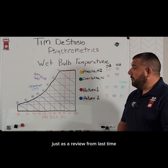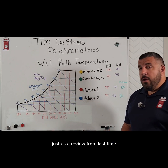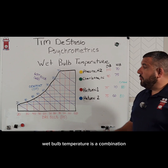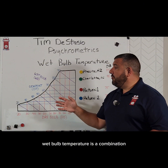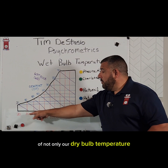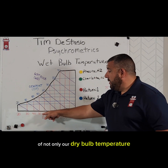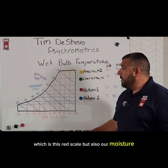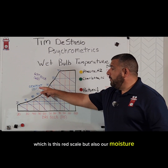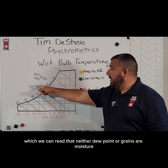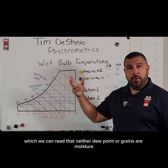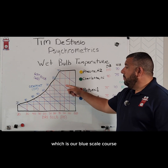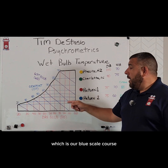Just as a review from last time, wet bulb temperature is a combination of not only our dry bulb temperature, which is this red scale, but also our moisture, which we can read in either dew point or grains of moisture, which is our blue scale.